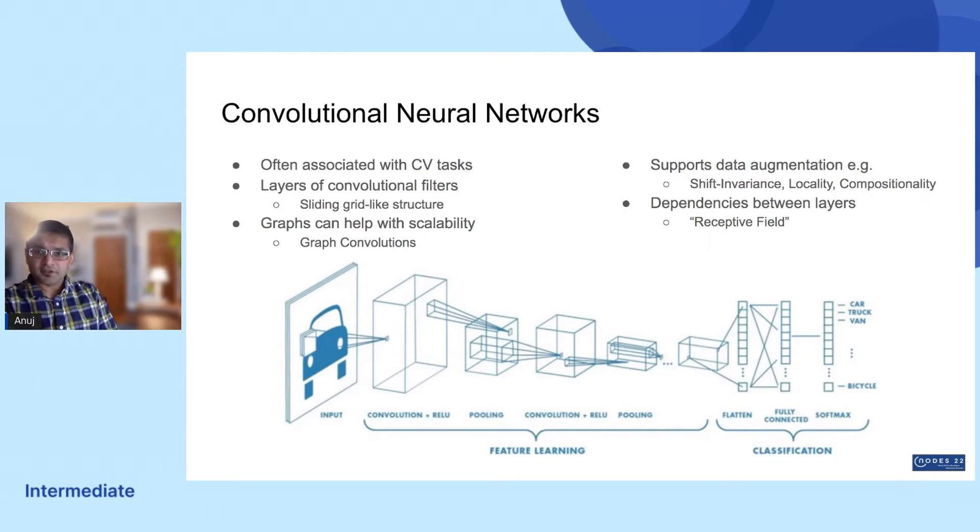In theory, CNNs are still good at handling both long-range and short-range dependencies in this way, but in practice, it's been shown to not scale linearly or perform as well. This is actually something that graphs can help with.